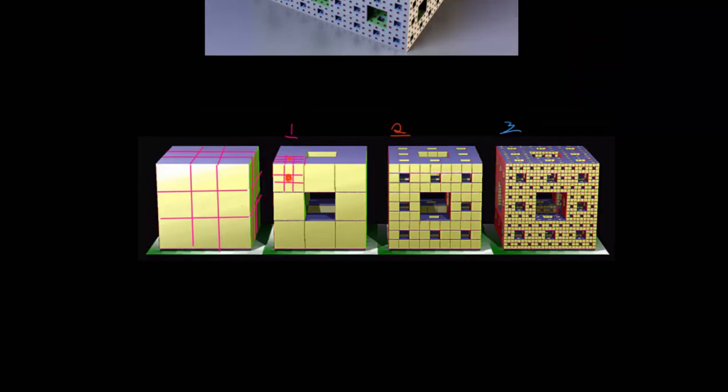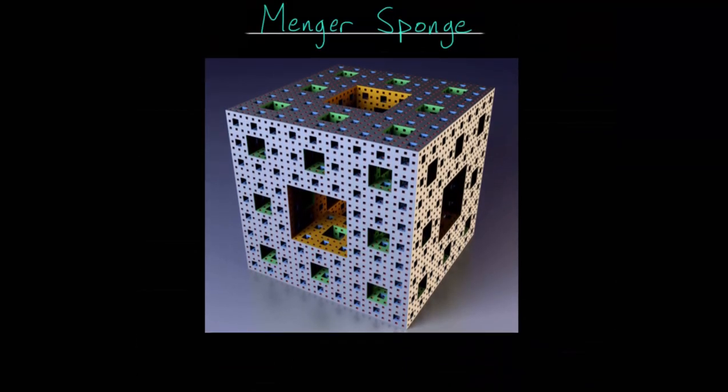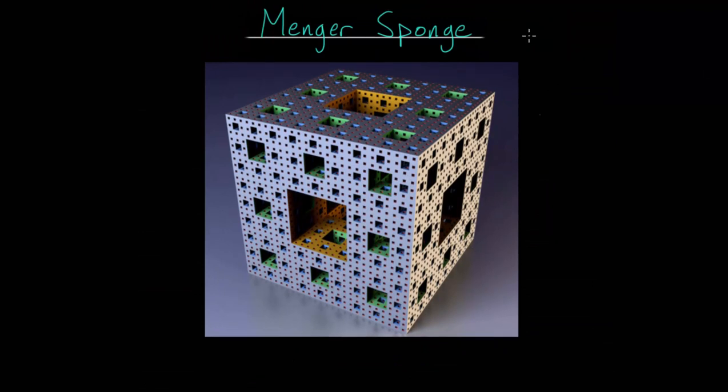From here, for each of these remaining smaller cubes, they will each be subdivided into 27 even smaller cubes. And then the middle cube from each of the faces will be removed, as well as the cube in the center. That process will be carried out infinitely many times, where you can see step three here. And after this infinite process, you end up with this shape here, which is called the Menger sponge.